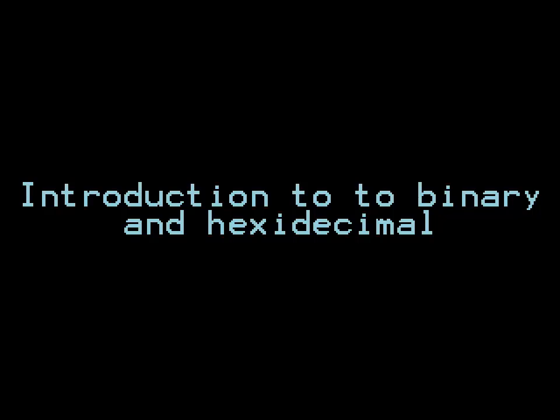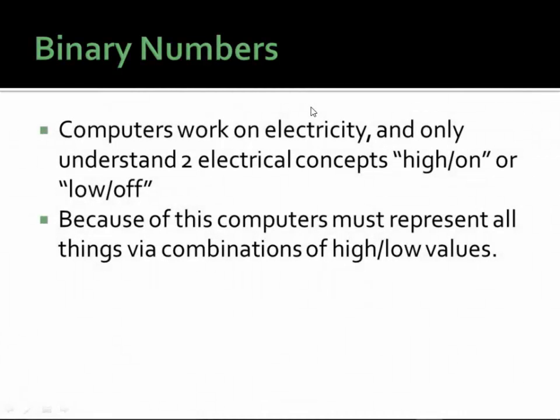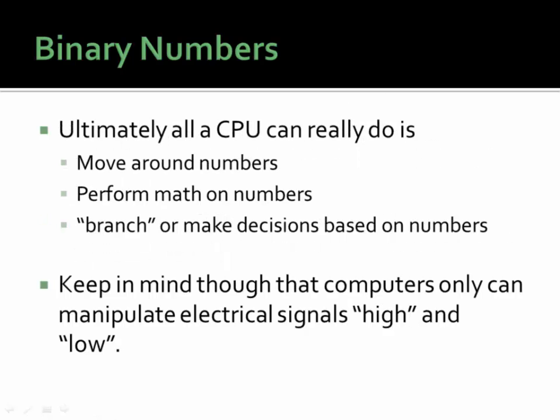In this section we are going to get an introduction to the binary and hexadecimal number system. Computers work on electricity, and therefore they only understand two electrical concepts: high or on, and low or off. Because of this, computers must represent all things via a combination of high and low values. Additionally, all a CPU can really do is move numbers around, perform math on numbers, and branch, or make decisions based on the results of numerical computations.